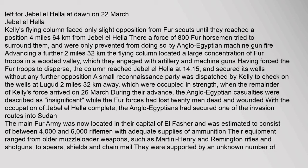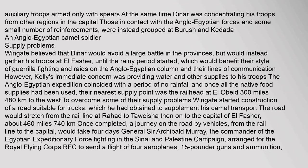Kelly's flying column faced only slight opposition from Fur scouts until they reached a position 4 miles away. Auxiliary troops were armed only with spears. At the same time Dinar was concentrating his troops from other regions in the capital. Those in contact with the Anglo-Egyptian forces and some small number of reinforcements were instead grouped at Barouche and Qadatta. Wingate believed that Dinar would avoid a large battle in the provinces but would instead gather his troops at El Fasher until the rainy period started, which would benefit their style of guerrilla fighting and raids on the Anglo-Egyptian column and their lines of communication. However, Kelly's immediate concern was providing water and other supplies to his troops. The Anglo-Egyptian expedition coincided with a period of no rainfall and once all the native food supplies had been used, their nearest supply point was the railhead at El Obeid, 300 miles away.